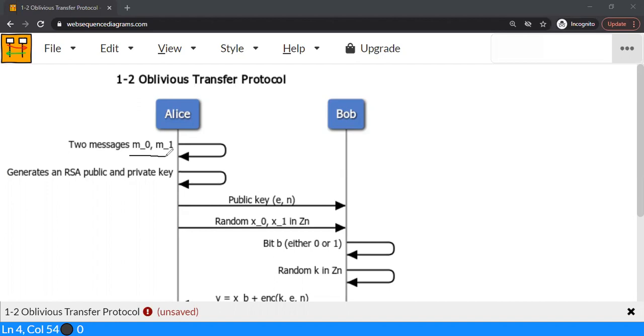Suppose Bob wants to learn about M0, Alice should only send about M0 and not about M1. But at the same time, Alice should not know that Bob learned about M0. So that's the problem we are going to solve. In order to solve this problem, we are going to assume public key cryptography exists. Meaning we can do encryption using public key and decryption using a private key. If we assume such a setup exists, then we can solve this problem.